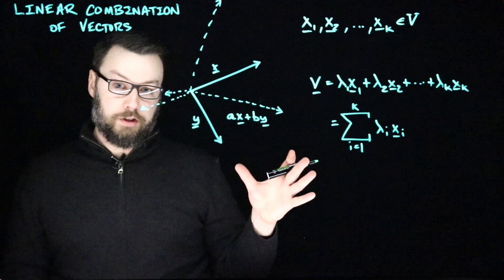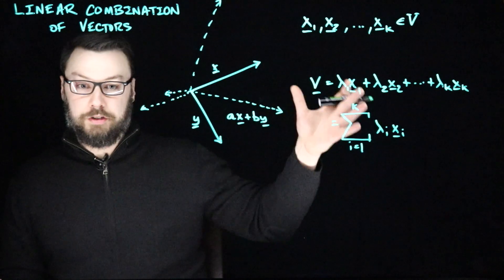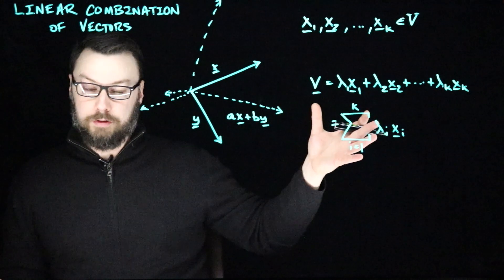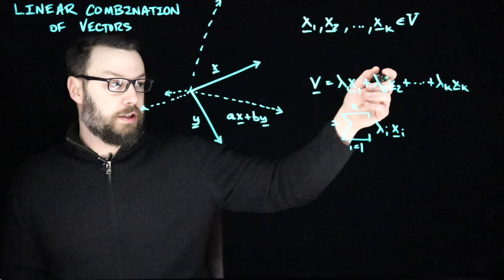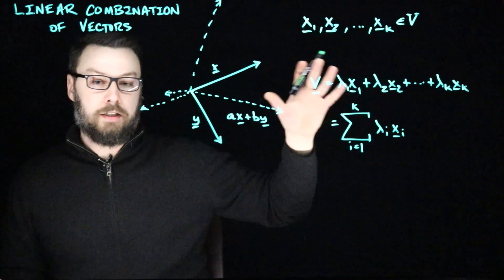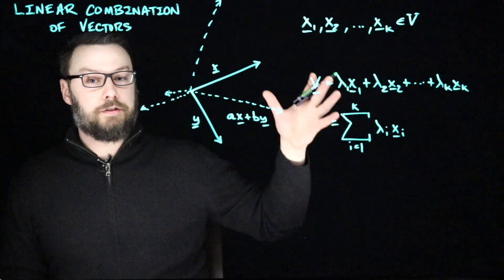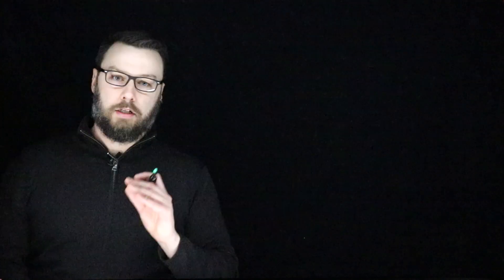If you want to describe the zero vector in this way, you could just make all of the lambdas zero — multiply 0 times x_1, 0 times x_2, and so on, add together all of those zero vectors, and we get the zero vector.